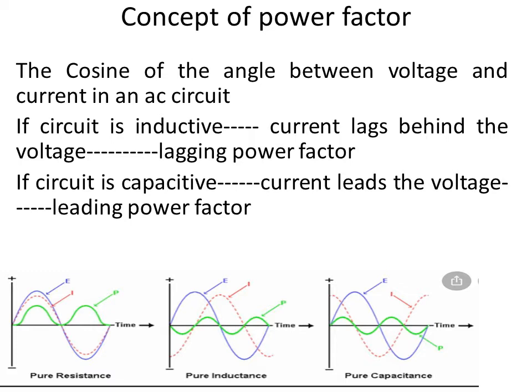In the case of a pure inductive circuit — the second diagram — when the current is maximum, the voltage is not maximum; it is zero. When the current is zero, the voltage is maximum. So they are 90 degrees out of phase with each other. The current lags behind the voltage by 90 degrees, so it is a lagging power factor in the case of a purely inductive circuit. In the case of a capacitive circuit, refer to the third phasor diagram.